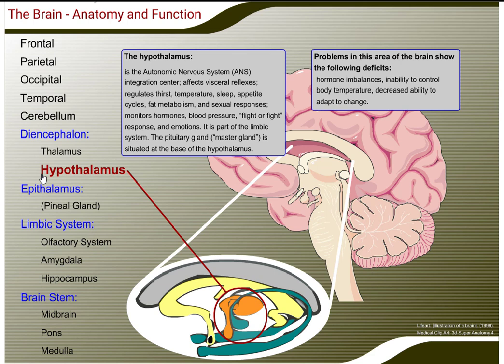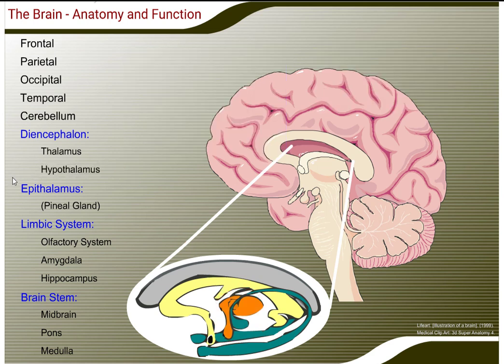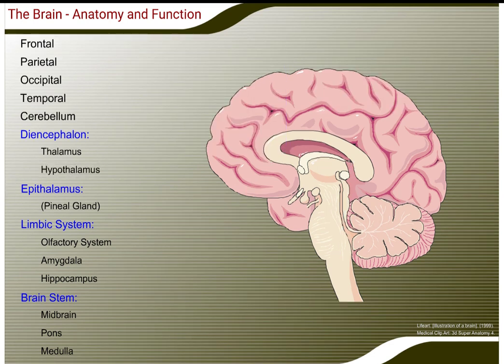Problems in this area of the brain show the following deficits: hormone imbalances, inability to control body temperature, and a decreased ability to adapt to change. The epithalamus — pineal gland.